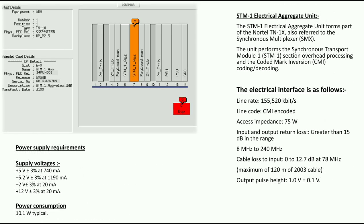Slot 6 and slot 7 are for the aggregator cards, which collect the traffic from the tributary cards and pass it to the ring. We are selecting the STM-1 aggregator card here. This unit performs the synchronous transfer module section overhead processing and coding/decoding. The electrical interfaces include line rate, line code, access impedance, input power, cable loss, and other specifications.